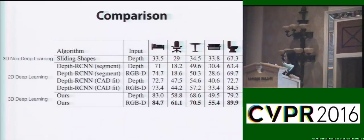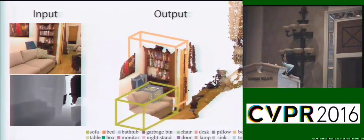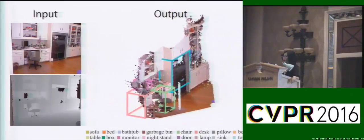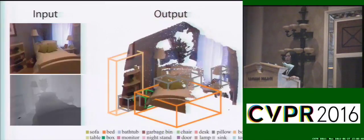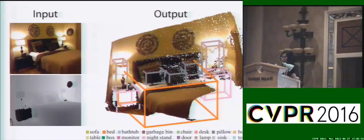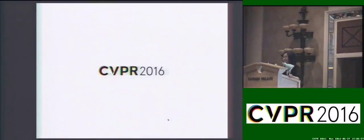We evaluate our algorithm on standard benchmarks such as the NYU dataset and SUN RGB-D dataset. On the left is the input color and depth image, and on the right is the output bounding boxes with 3D point clouds. The colors of the bounding boxes encode the object categories. All source code and pre-trained models are available online, and you are welcome to our poster for more information. Thank you.